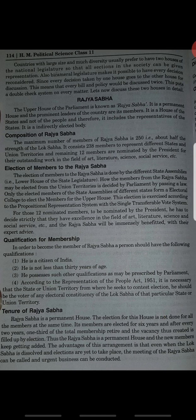Next is the Rajya Sabha. The upper house of the parliament is known as Rajya Sabha. It is a permanent house, meaning it has no fixed retirement time, and the prominent leaders of the country are its members.